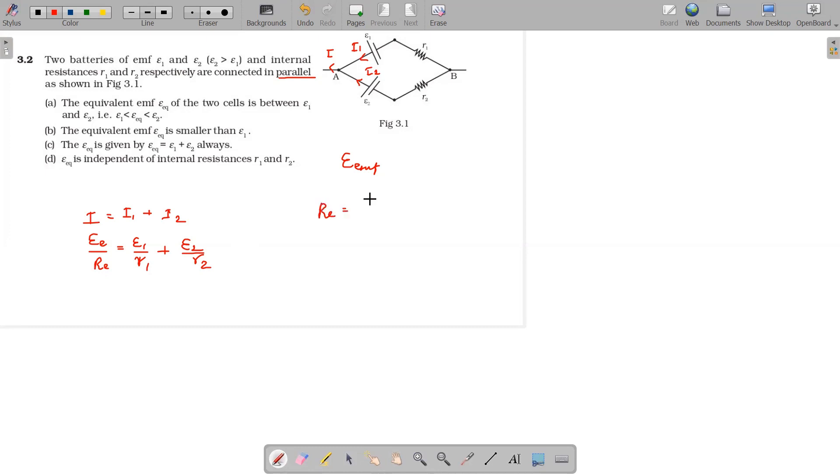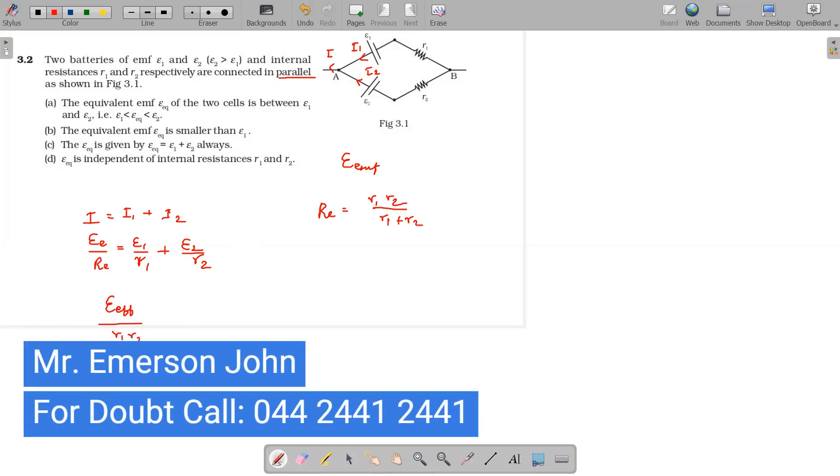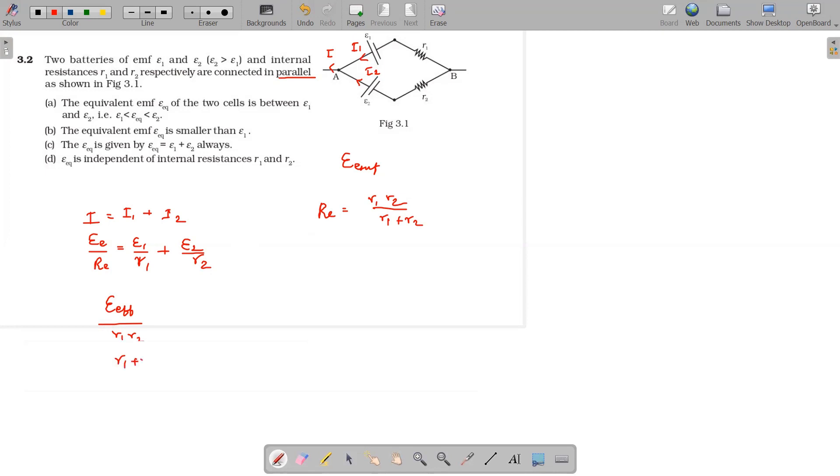Resistance will be equal to r1*r2/(r1+r2). Instead of that we can substitute for e_effective by r1*r2/(r1+r2).